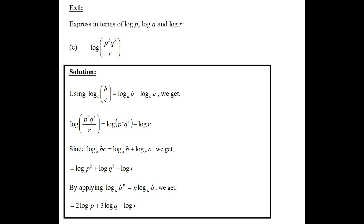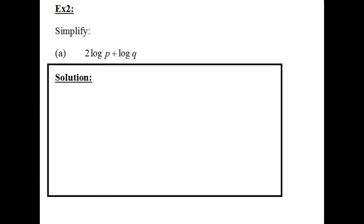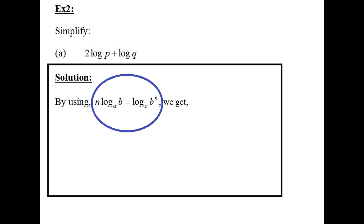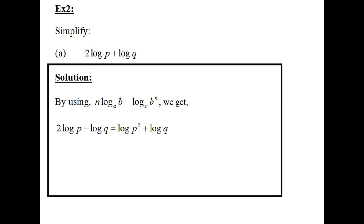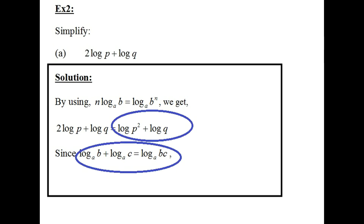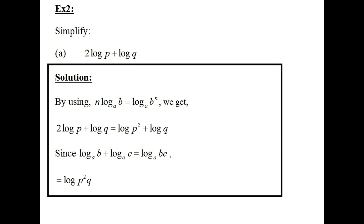Now let's move on to example 2a: simplify 2 log p plus log q. Using the power rule, I rewrite 2 log p as log of p squared, giving log of p squared plus log of q. Then applying log b + log c = log bc, I combine these as log of p squared q. This is the solution to example 2a.